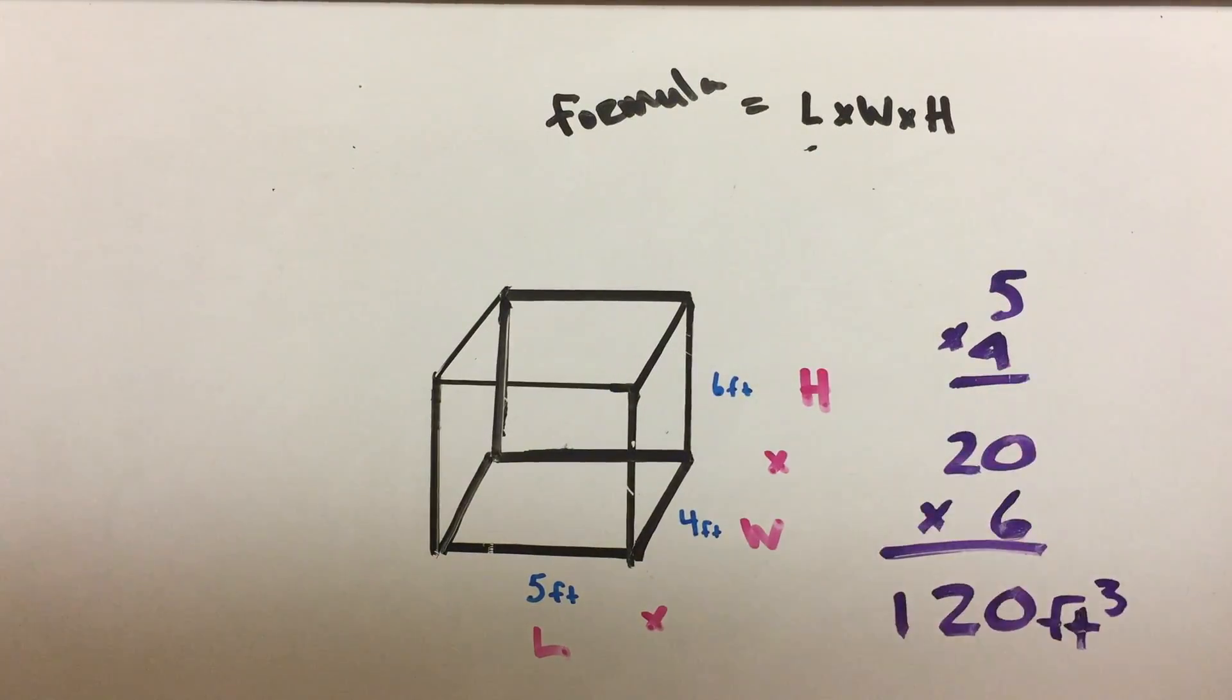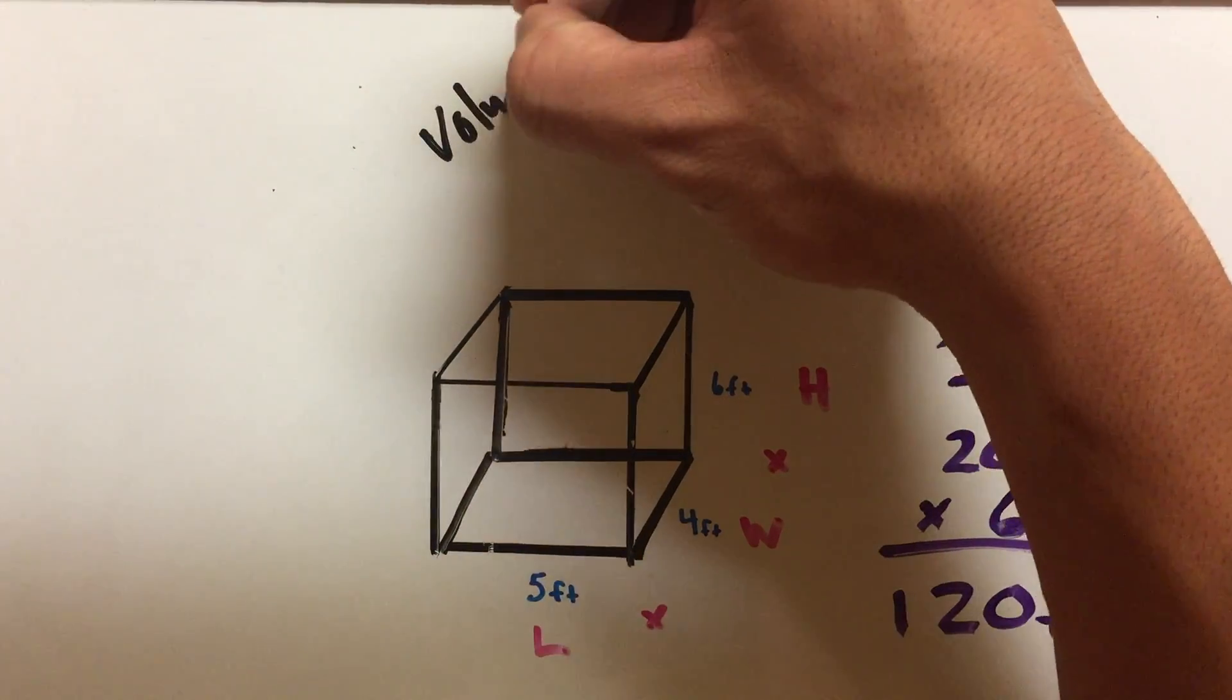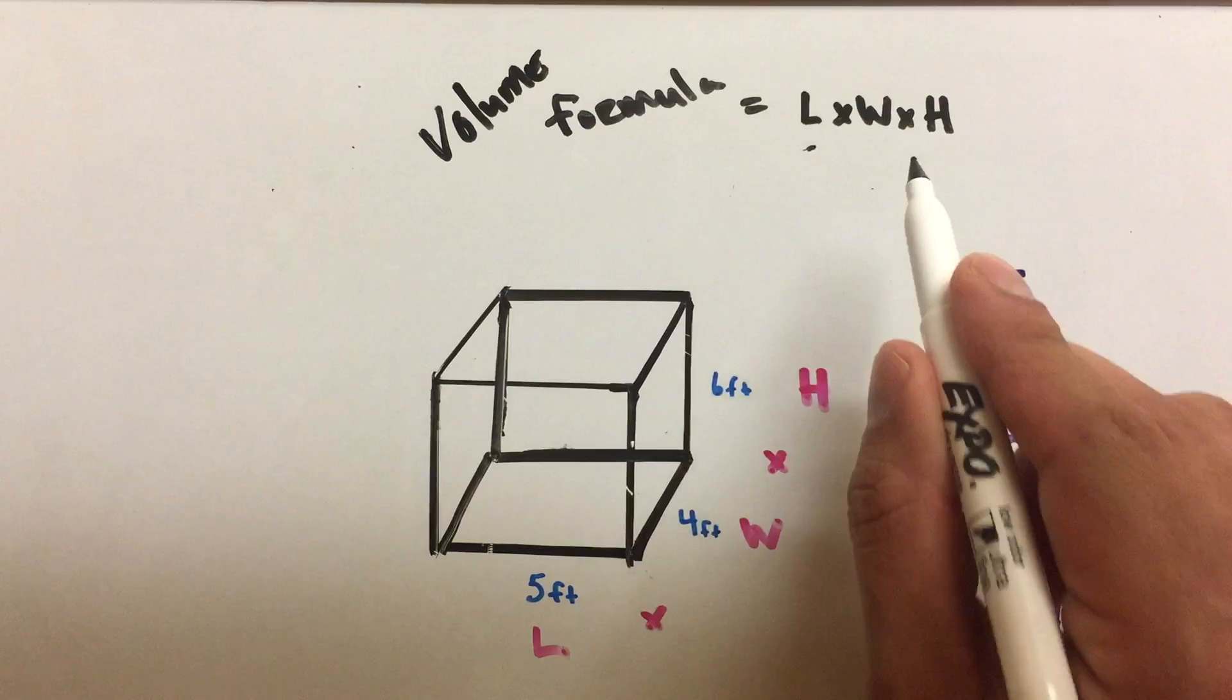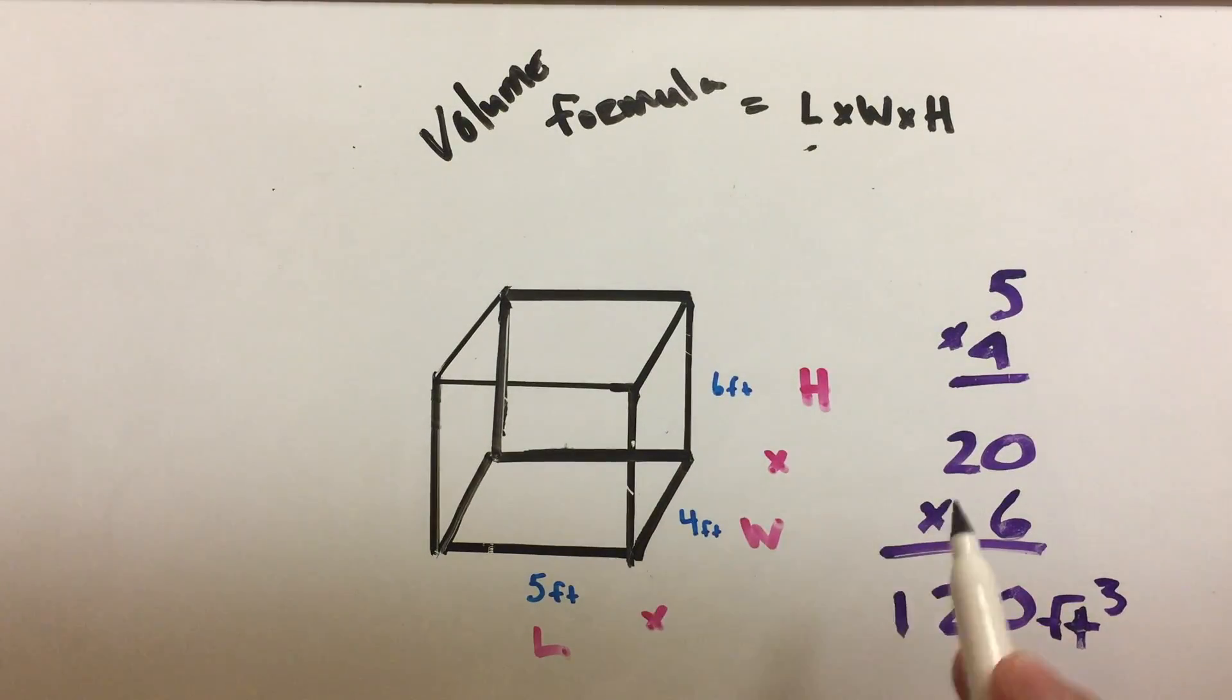Alright, before I let you go, let's review again. Remember, volume is the amount of space inside an object. The volume formula is length times width times height. You just multiply all three up and you get your final answer. And do not forget your unit of measure cubed, because there's one, two, three cubed. Alright, that's it for today. Thank you for watching. Peace.